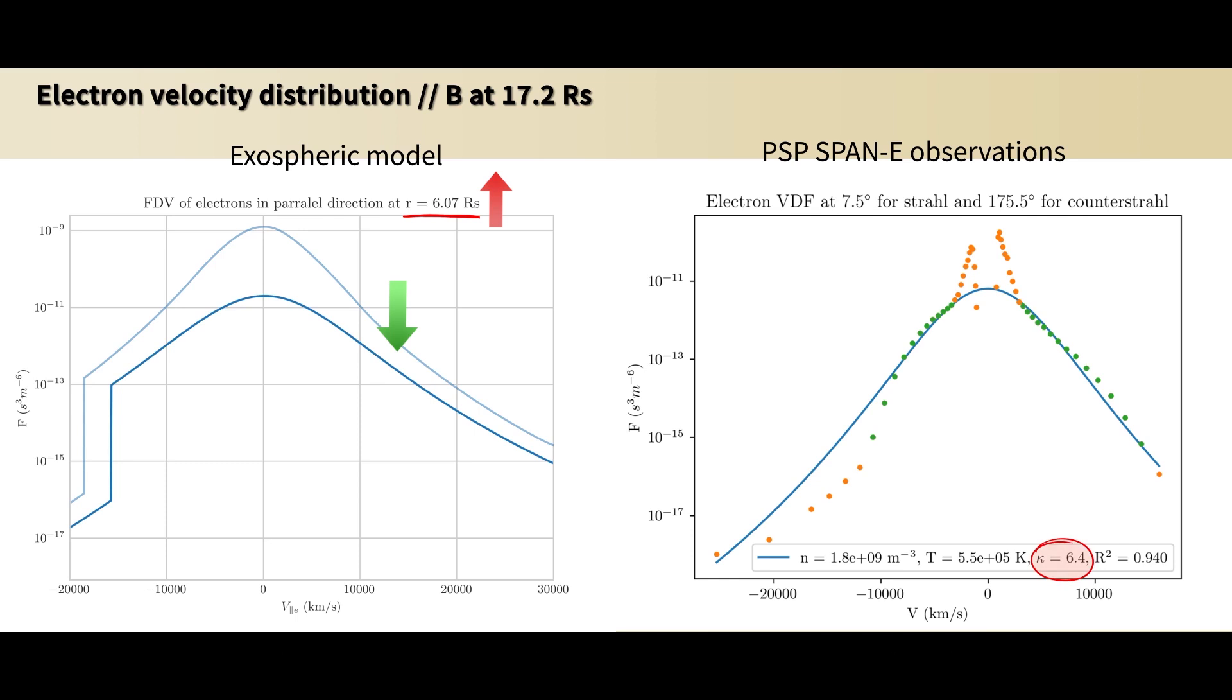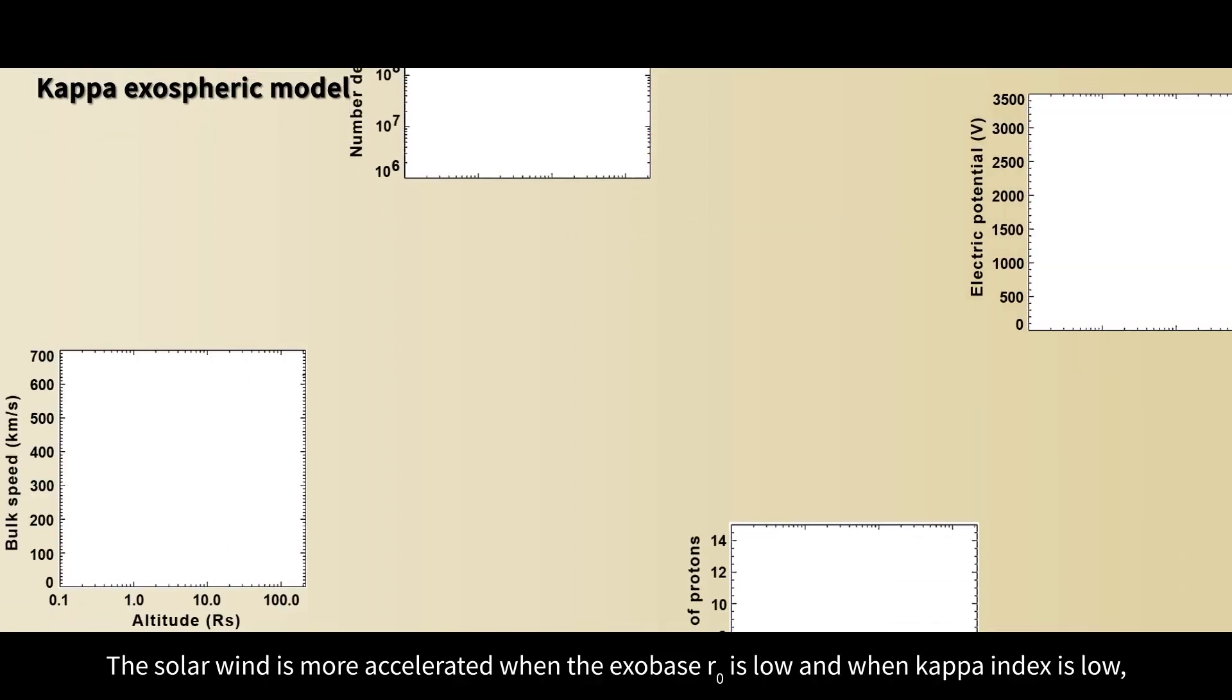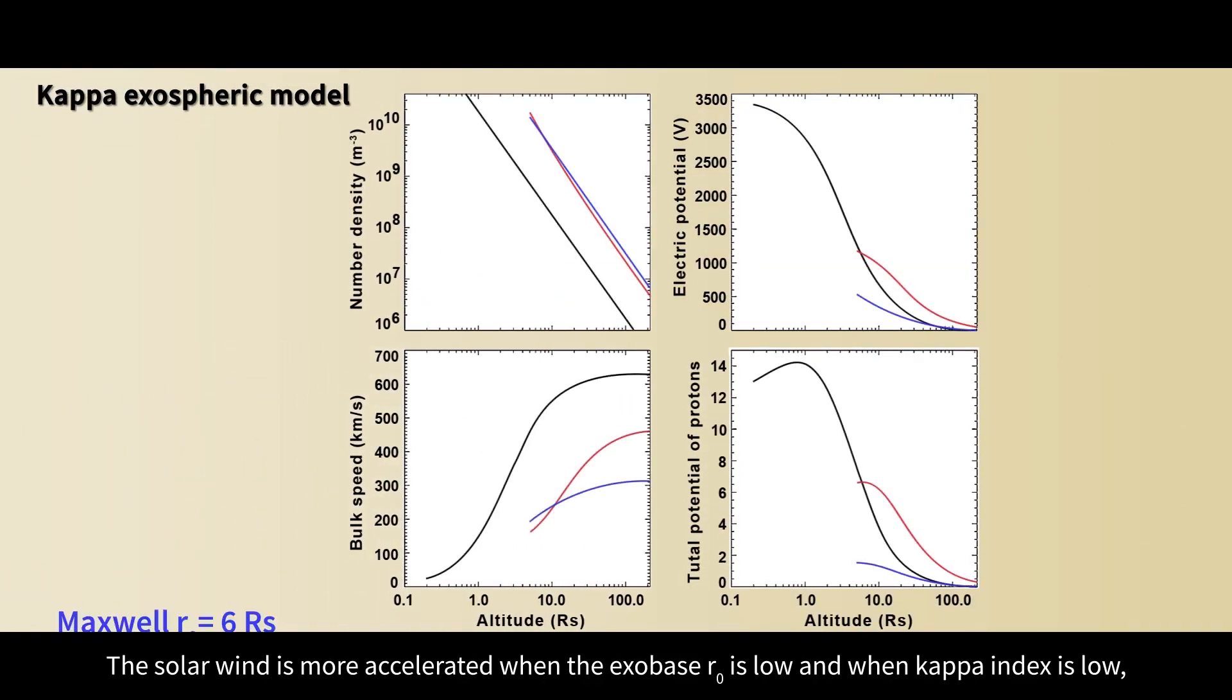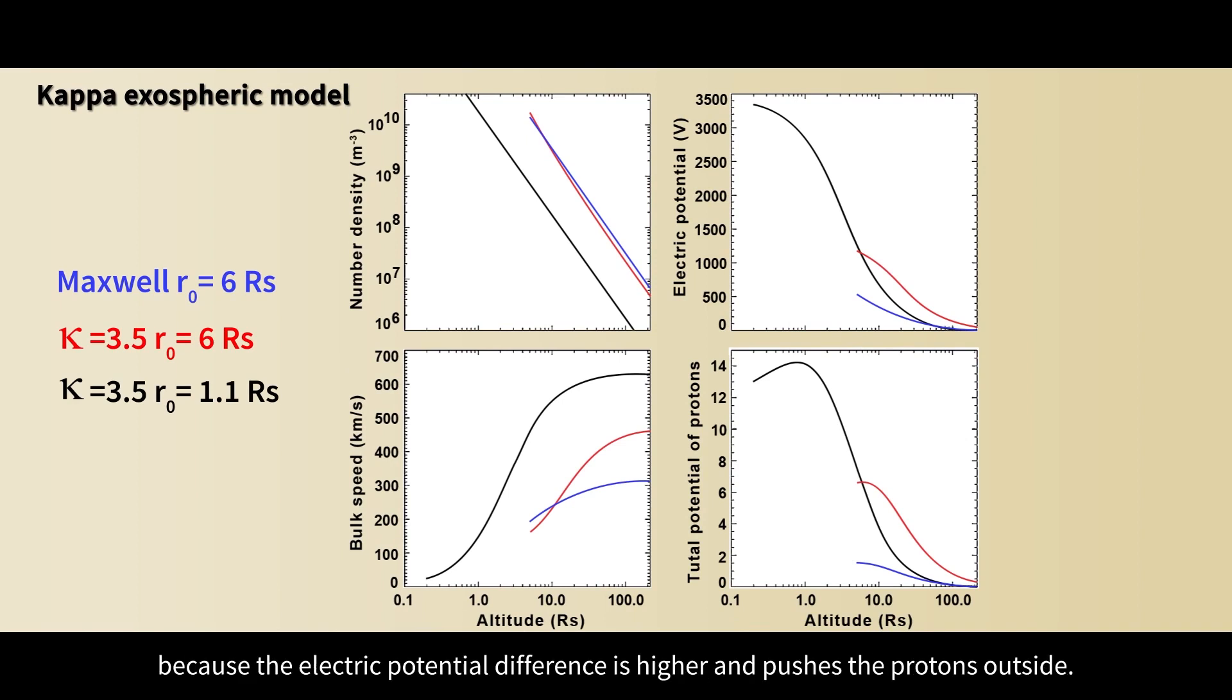The solar wind is more accelerated when the exobase r0 is low and when kappa index is low, because the electric potential difference is higher and pushes the protons outside.